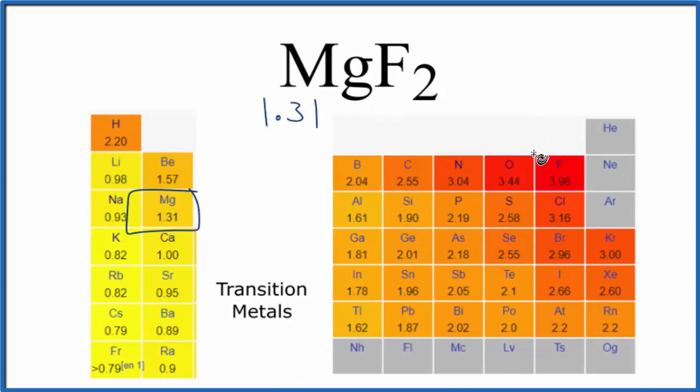And then fluorine, which is the most electronegative element on the periodic table, 3.98. So the difference between these two numbers, that's greater than 2.